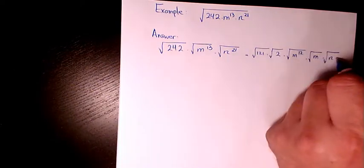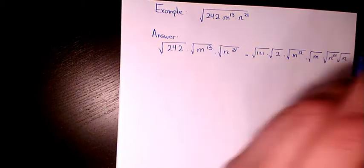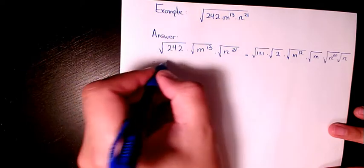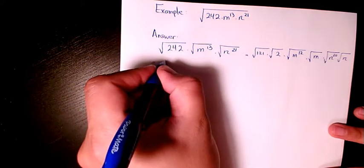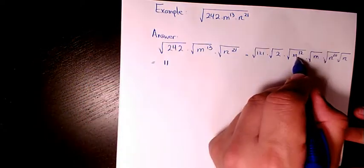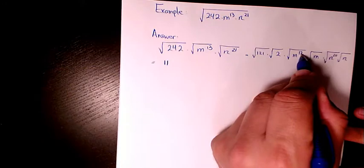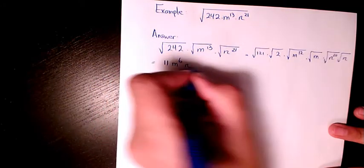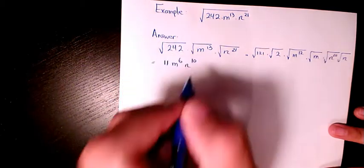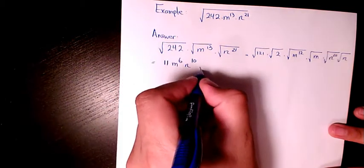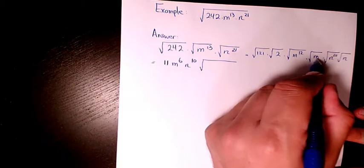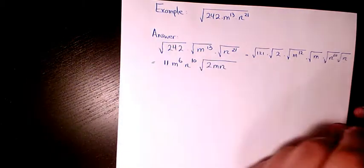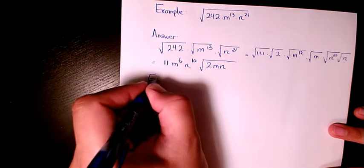And n to the power of 21 becomes n to the power of 20 times n. 121 is 11 squared, so the square root of 11 squared is just 11. M to the power of 12 divided by 2 is m to the power of 6, and n to the power of 20 divided by 2 is n to the power of 10. So the final answer is 11m⁶n¹⁰ times the square root of 2mn.